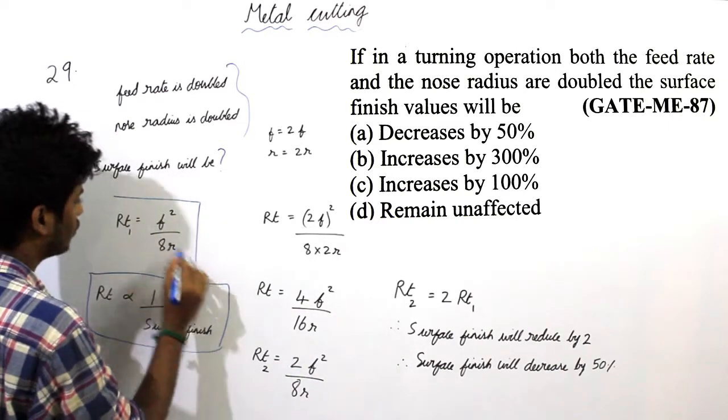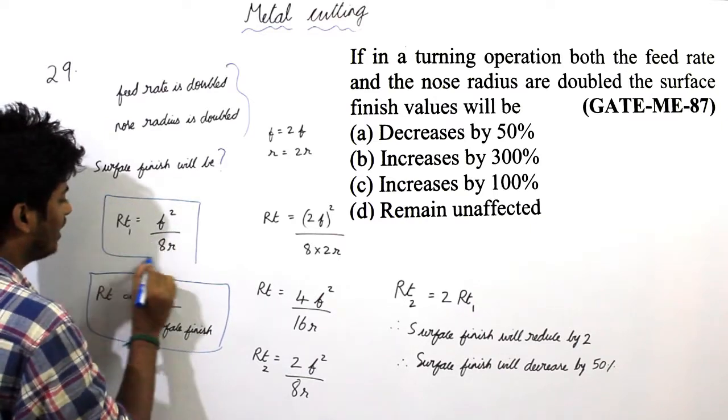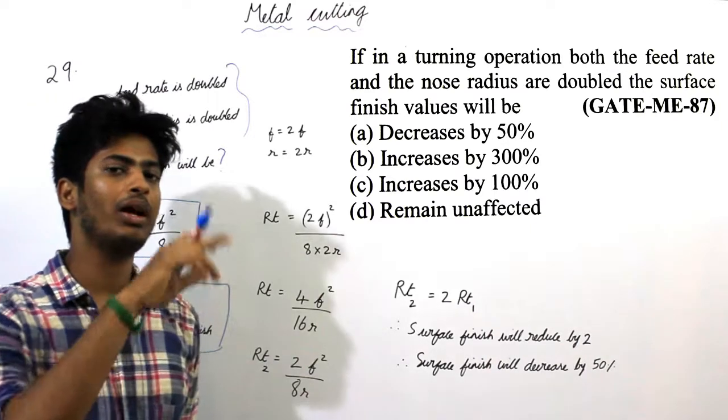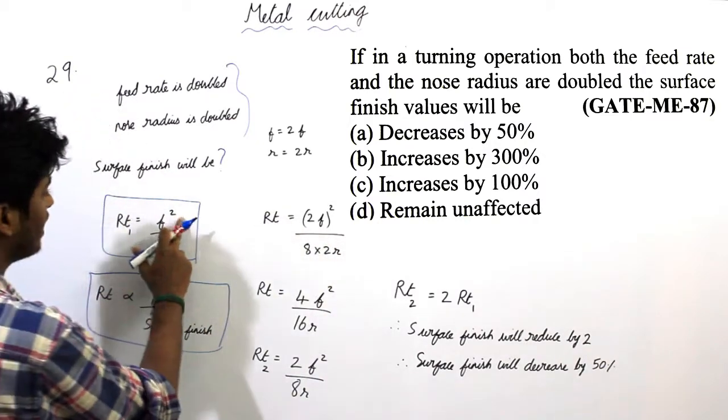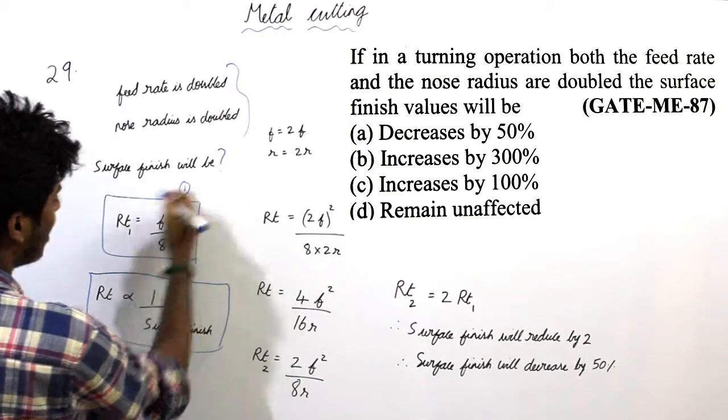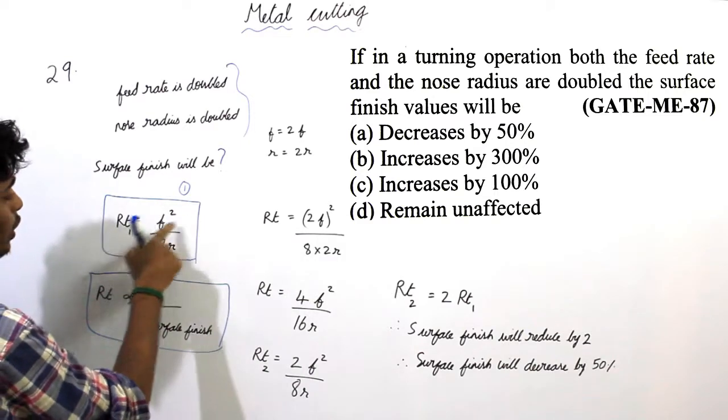Rt equals f squared by 8r, or Rt can be written as Rt equals f by tan cs plus cot c. This is case 1. Rt1 for case 1 is equal to f squared by 8r.